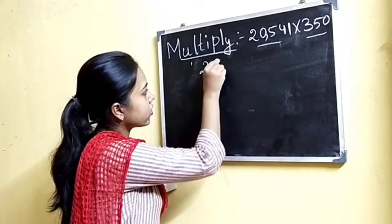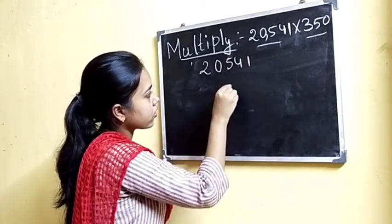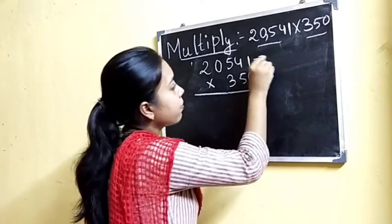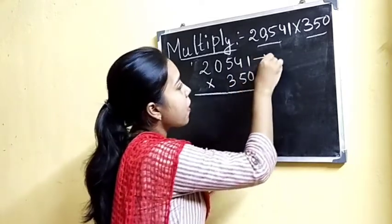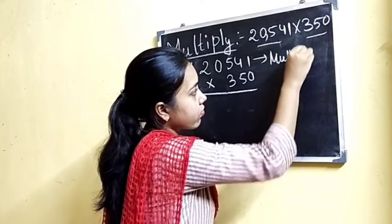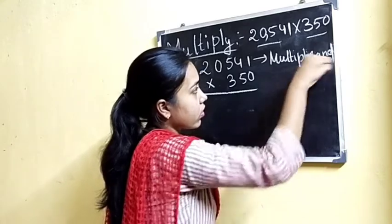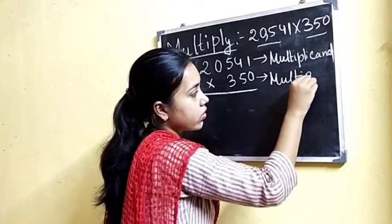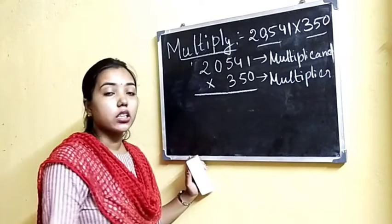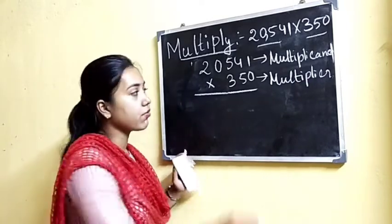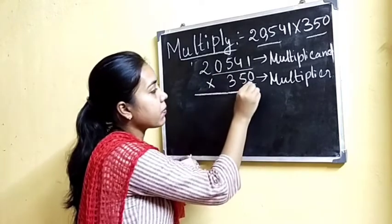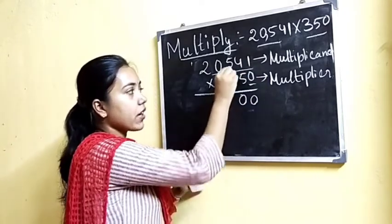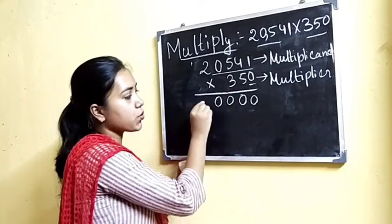Now let us write the numbers. So this is our problem. The number which is to be multiplied by another number is called the multiplicand, and the number which multiplies is called the multiplier. Now let us start. Remember that we have to start multiplication from the ones place. So we have to multiply this number by zero first. Zero ones is zero, zero fours is zero, zero fives is zero, zero zeros are zero, and zero twos are zero.